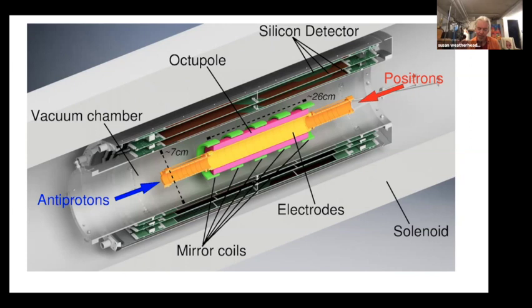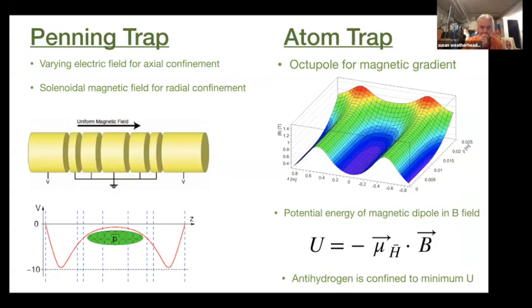These electrodes are nested penning traps. Then we have an octopole magnet, which we use for the neutral particle trap. This is the scale of our experiment. It's not exactly the LHC. We use penning traps for charged particles. You have these electrodes which set up potentials, a potential well for confinement along the axial direction. Then radially, we use a solenoidal magnetic field to confine it radially.